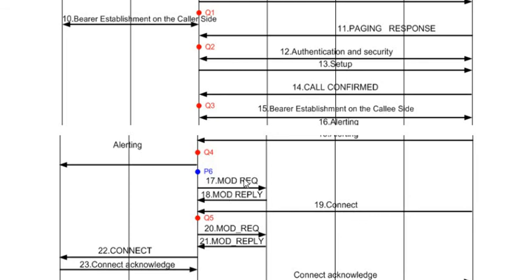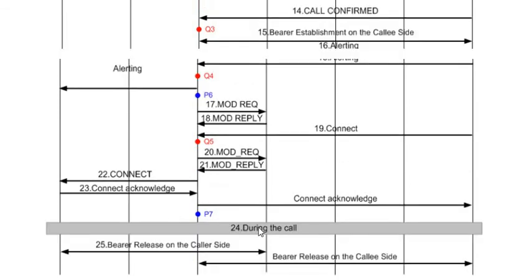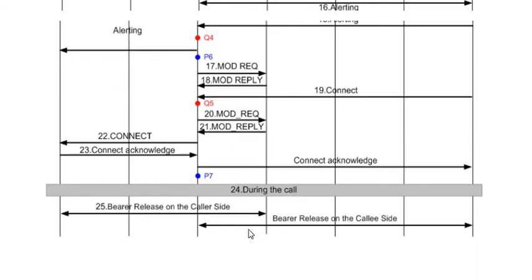Once the B party answers the call, the bearers are modified to establish voice from B party to A party in full duplex mode, and a Connect message is sent to the A party. Once the call is complete, the bearer is torn down and disconnected from both A and B parties.